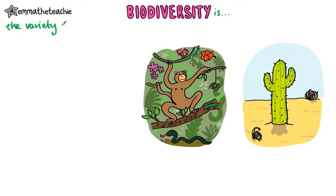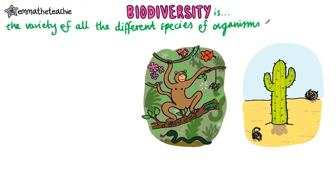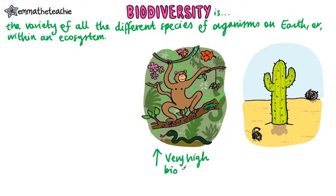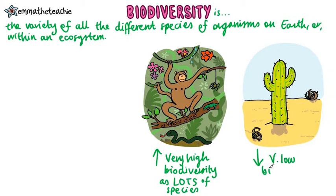Biodiversity is the variety of all the different species of organisms on Earth or within an ecosystem. The rainforest has a really high biodiversity because there are lots of different species there, while the desert has a much lower biodiversity as fewer species live there.